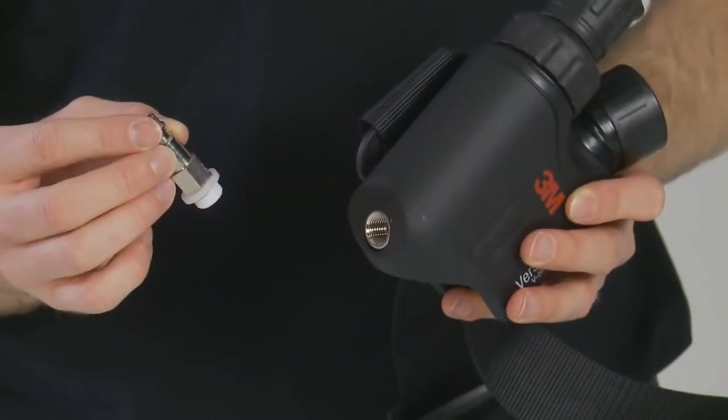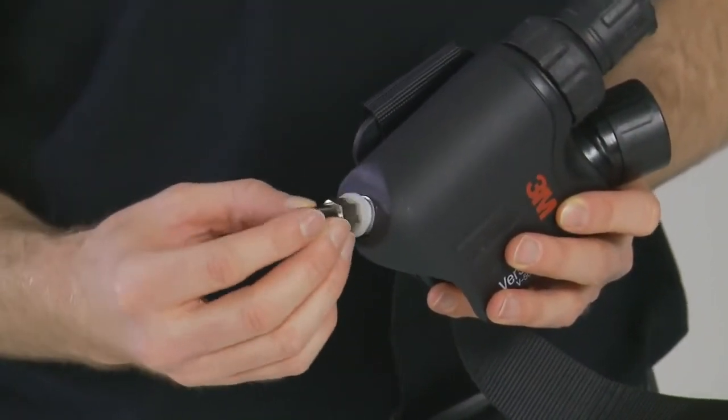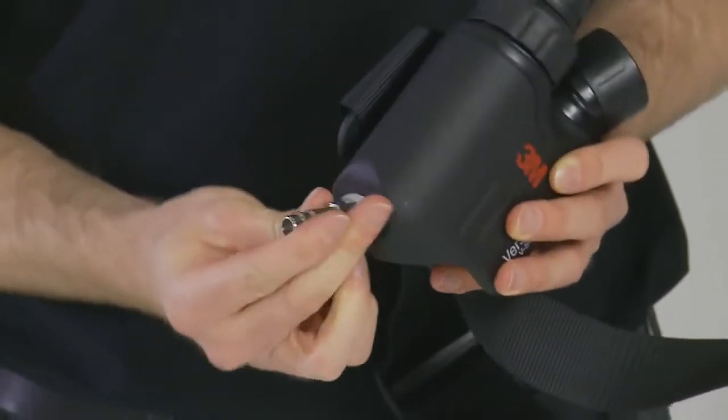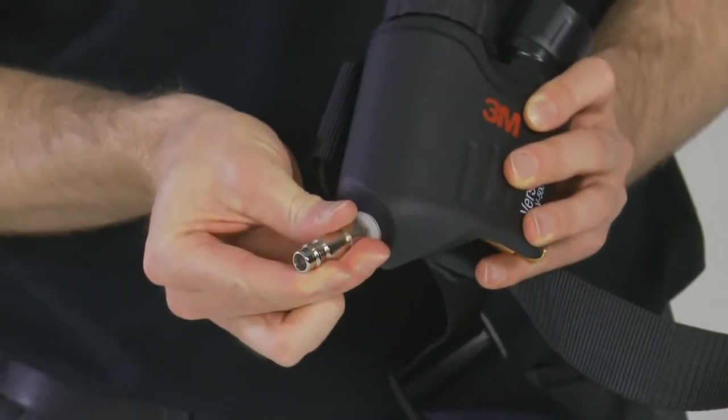Screw a male plug belt unit coupling onto the regulator. Note, the male plug couplings are sold separately from the regulator and should correspond to the type of female socket used on the cast.